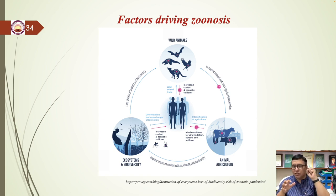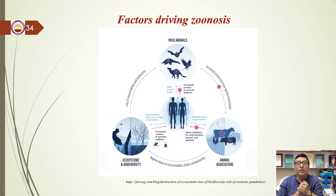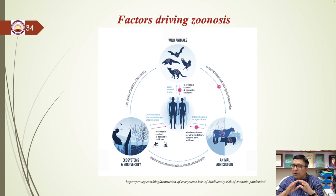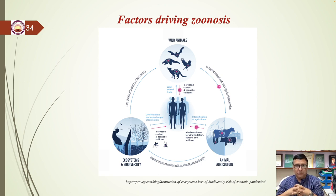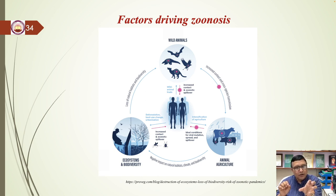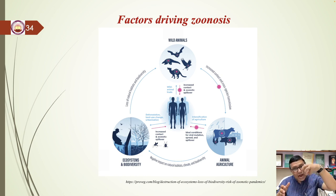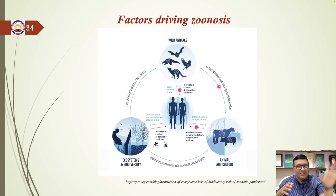Zoonoses are also opportunistic, affecting hosts who are already stressed due to health, environmental, social, or economic factors. Zoonoses are more common in intensively farmed animals, which are typically genetically identical within a herd or flock and hence lack the genetic variety that gives resilience, as a result of being selected for production rather than disease resistance.